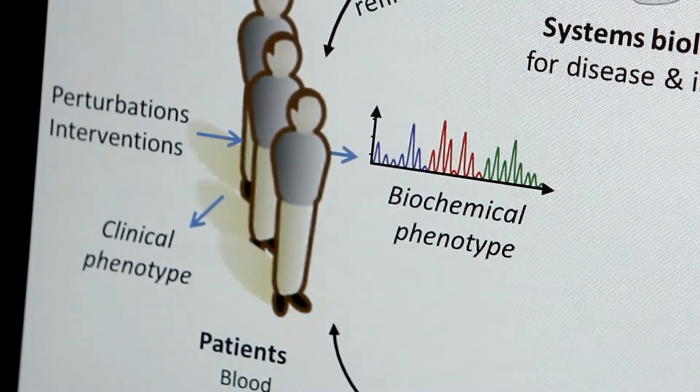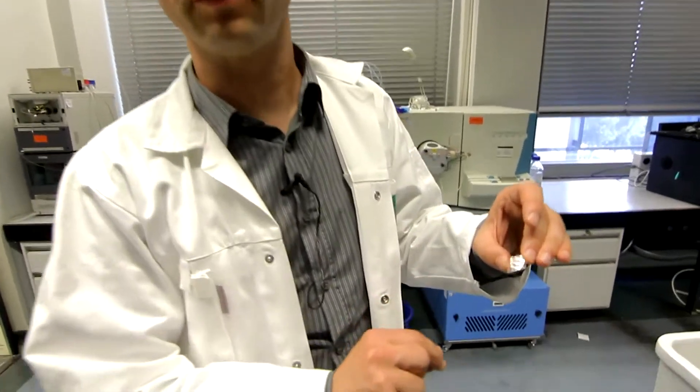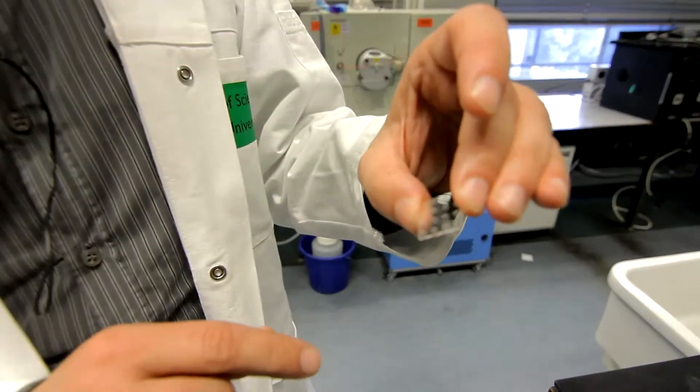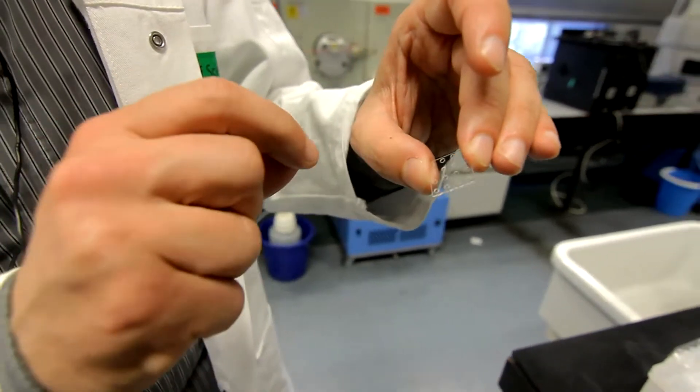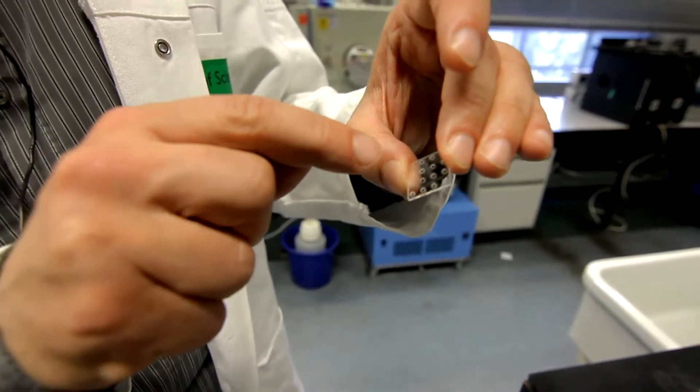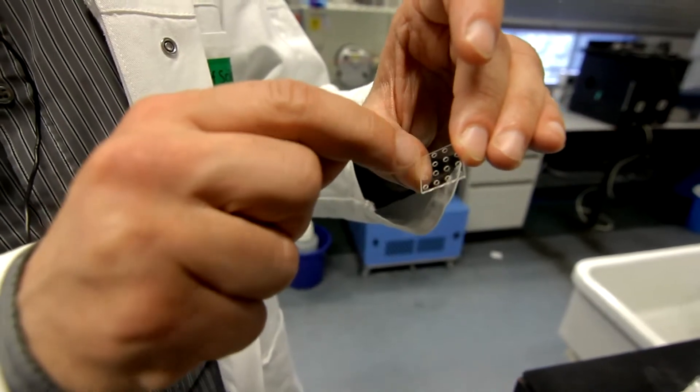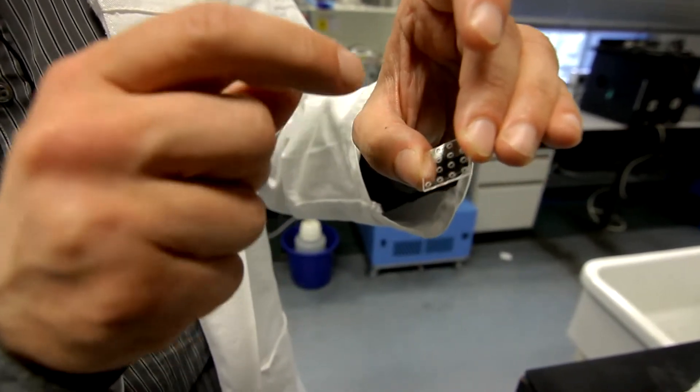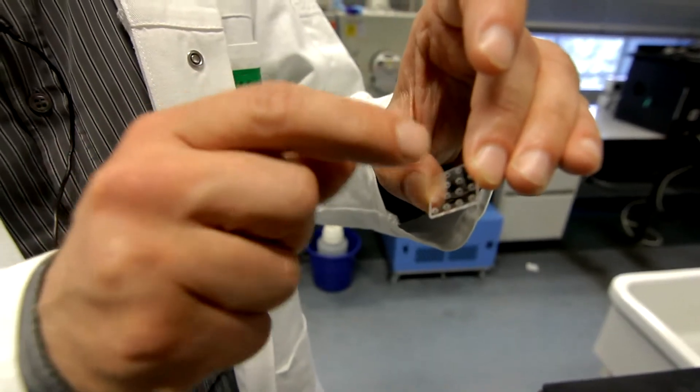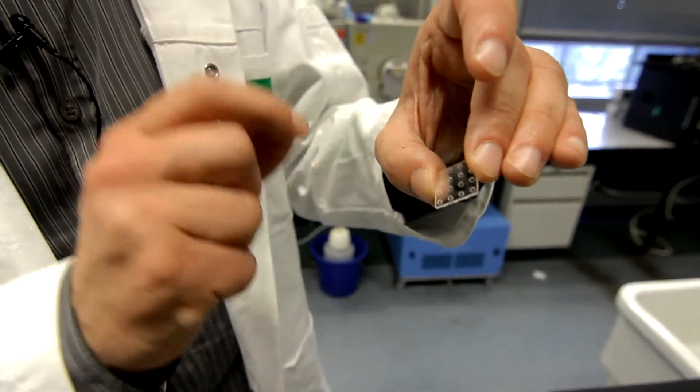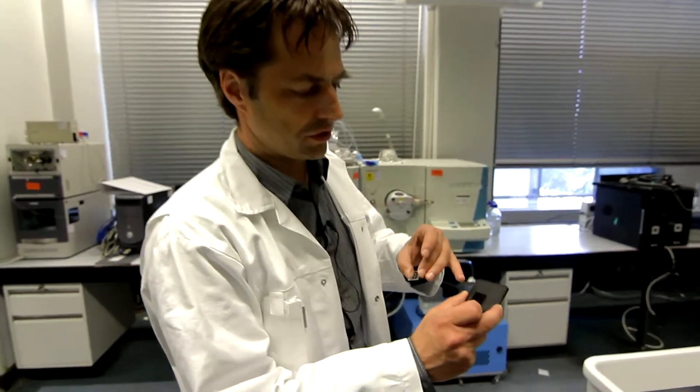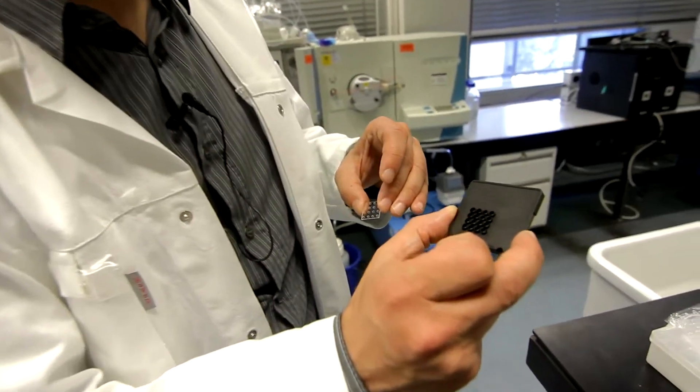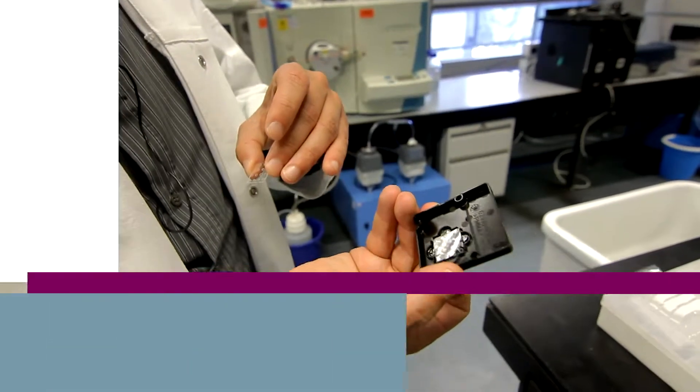Here you see a chip where we have realized depleted zone isotachrophoresis. The principle is as follows. We apply here voltages to trap the ionic metabolites at the intersection with a nanochannel. And by changing then the fields, we can release the ionic metabolites one by one to further pretreatment or detection by a spectrometric detector or a mass spectrometer. And here you see the holder for the bioanalyzer from Agilent where we implemented this type of chip.